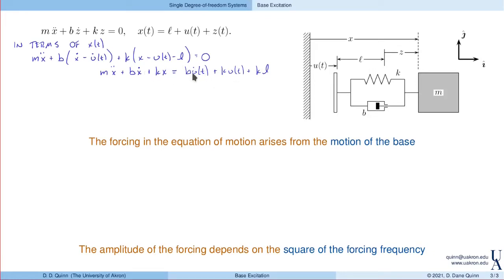Now let's do this in terms of Z. This is actually a little cleaner because the only X component we have is in the acceleration. X double dot is U double dot plus Z double dot, plus B times Z dot plus K times Z equals zero. Simplifying and putting all the Z terms on the left: M Z double dot plus B times Z dot plus K times Z equals minus M U double dot times T. In either case, the forcing in the equation of motion arises from the motion of the base.